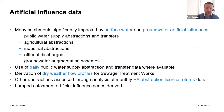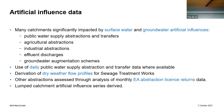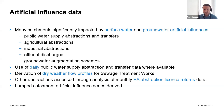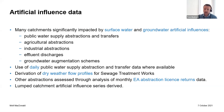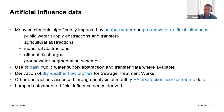The other major input to the hydrological models is artificial influence data. A lot of the catchments we were looking at are significantly impacted by surface water and groundwater artificial influences. In general, we were looking to use daily public water supply abstractions and transfer data where available. We looked at deriving dry weather flow profiles for sewage treatment works — in some areas a particularly significant contribution to flow. For other abstractions, we were looking at analysis of the Environment Agency abstraction licence returns data. This was all brought together to derive lumped series of surface water and groundwater artificial influences that could be incorporated within the models.